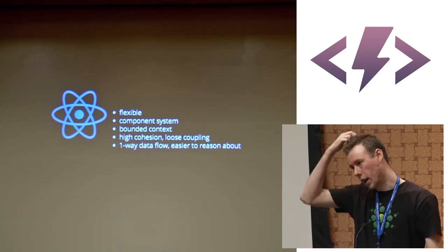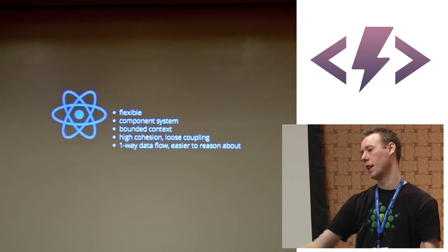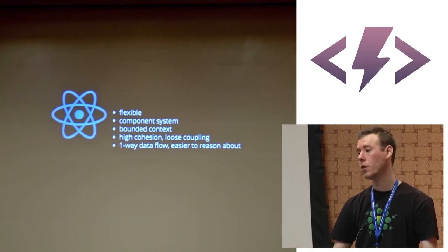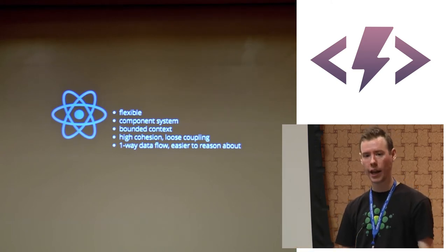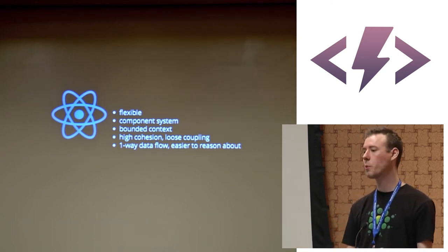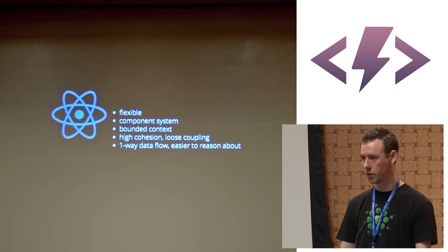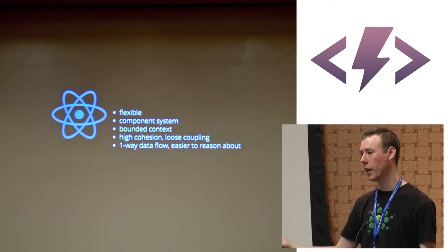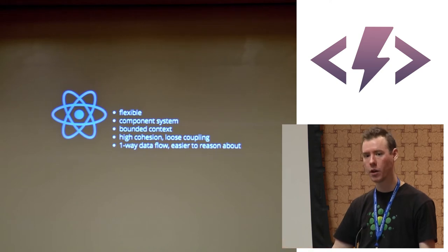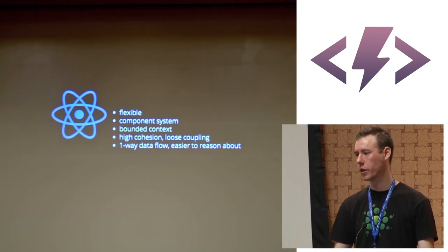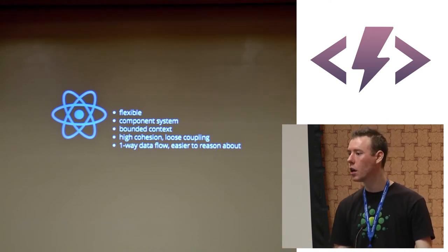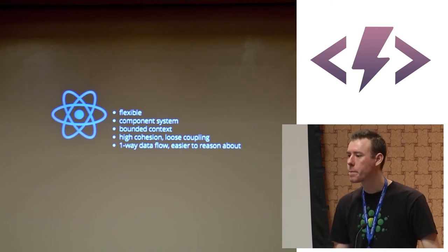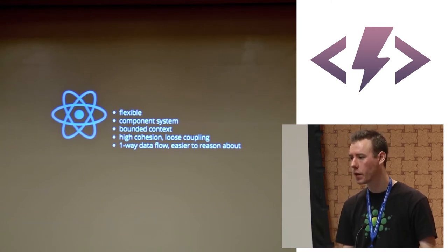I wouldn't say they're tightly coupled — the virtual DOM enables this idea of one-way data flow. You fire, and it triggers the render. The one-way data flow: is it only from the model to the view, or can it go from the view to the model?